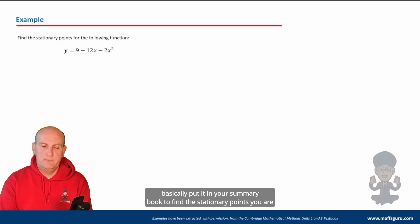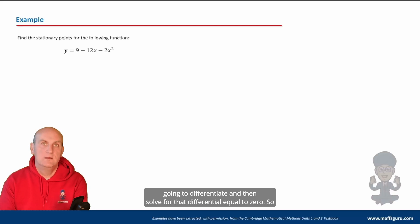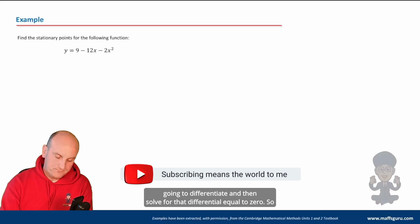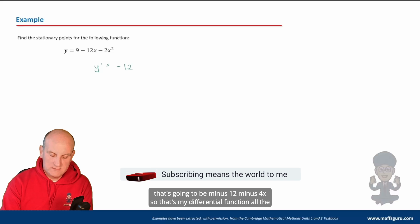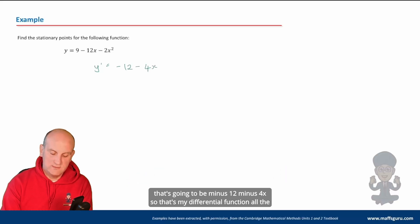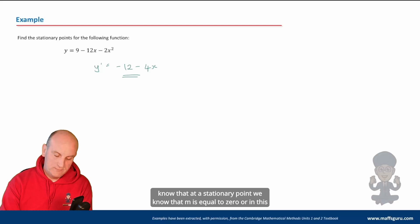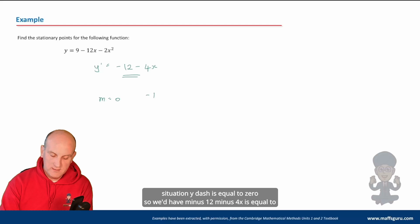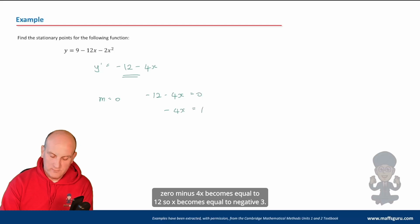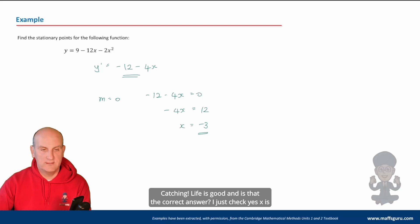To find stationary points, put this in your summary book: you differentiate and then solve for that differential equal to zero. So y dash becomes equal to minus 12 minus 4x — that's my differential function. We know that at a stationary point m equals zero, or y dash equals zero. So we have minus 12 minus 4x equals zero, giving minus 4x equals 12, so x equals negative 3.